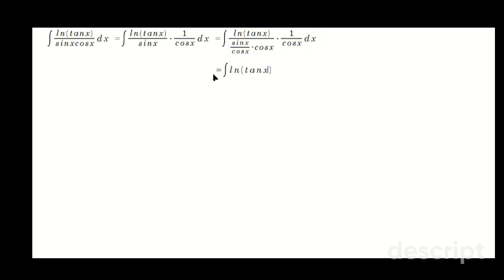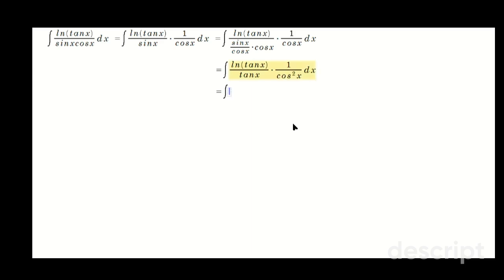So now look what happens. Antiderivative ln tan x. And here I will have tan x on the bottom from sine x over cosine x. This cosine times this cosine here will give me one over cosine squared x dx, which is good because this is secant squared. So you're going to have ln of tan x over tan x, and then this is secant squared x dx. And now we can say u equals tan x, which means du equals secant squared x dx, which we've managed to squeeze in here.